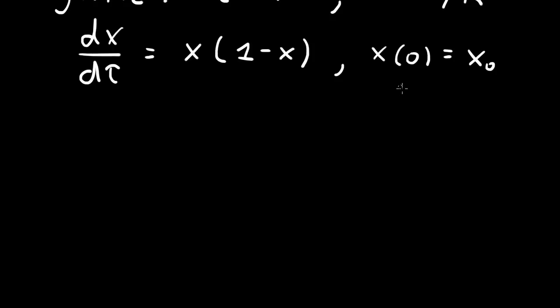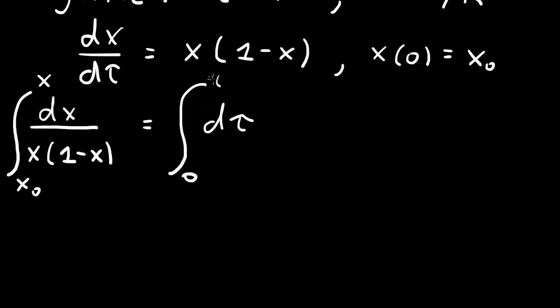In a differential equations class, you could be asked to solve this. This is a non-linear first order equation, but it's separable. To solve this we can separate, so we have dx over x times (1 minus x) and that's equal to dτ. Then we can integrate both sides. The integral goes from x₀ to x and from 0 to τ. The right hand side is easy, so this is just τ.